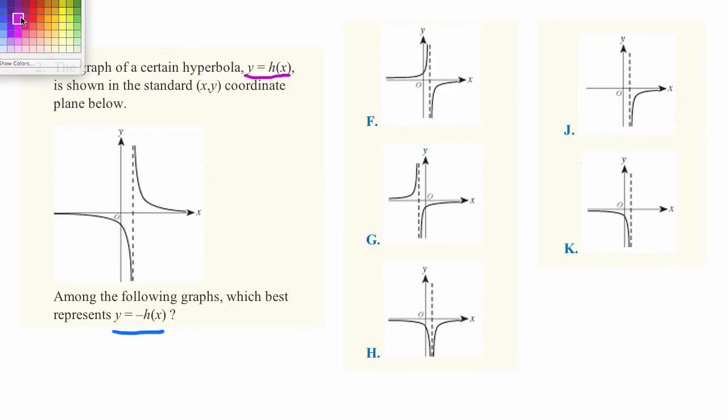You might not know what hx is or what a hyperbola is, but you don't need to know any of those things to solve this problem. All you need to realize is that this graph right here is equal to hx, and we want to know what the negative of a graph is.